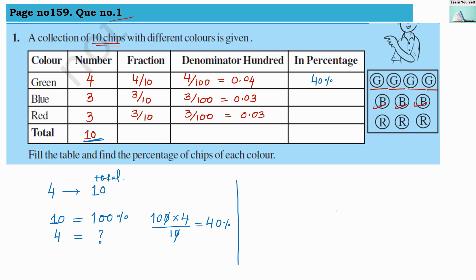Similarly, for blue color chips: if ten chips are 100 percent, then for three blue chips it is 3 × 100 ÷ 10. The 10s cancel and we get 30 percent. Red color chips are also three, so they are also 30 percent. Together: 30 + 30 + 40 = 100 percent. So all three chip colors cover 100 percent.